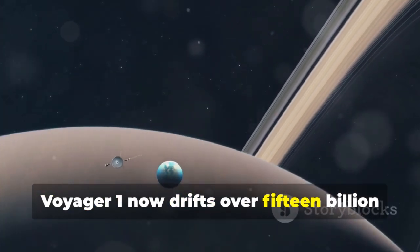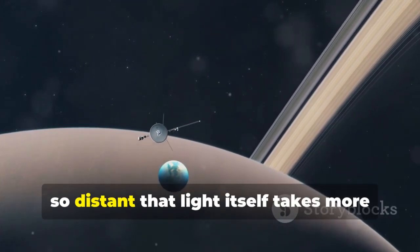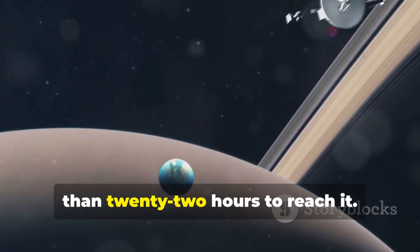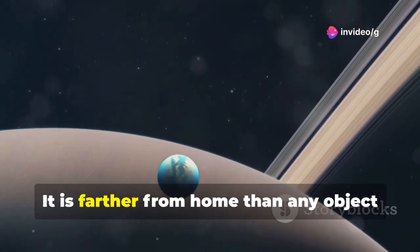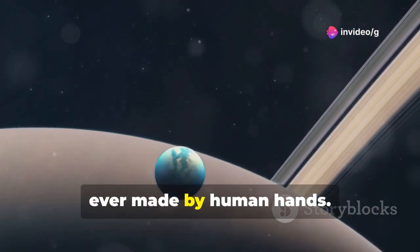Voyager 1 now drifts over 15 billion miles from Earth, so distant that light itself takes more than 22 hours to reach it. It is farther from home than any object ever made by human hands.